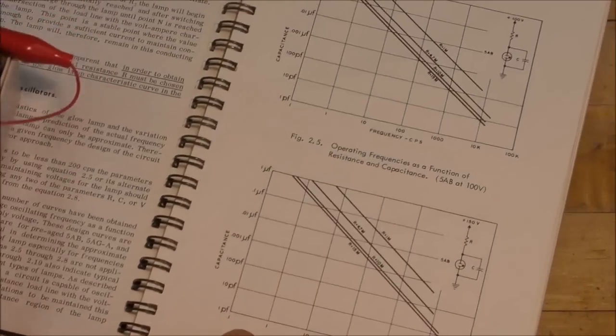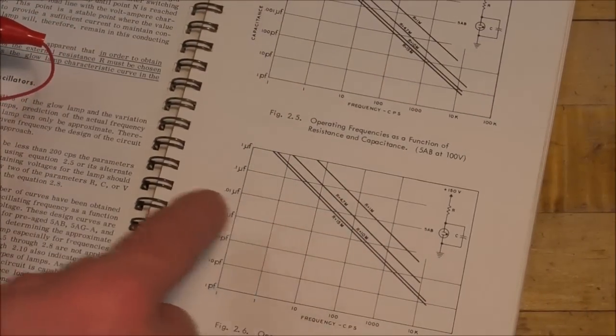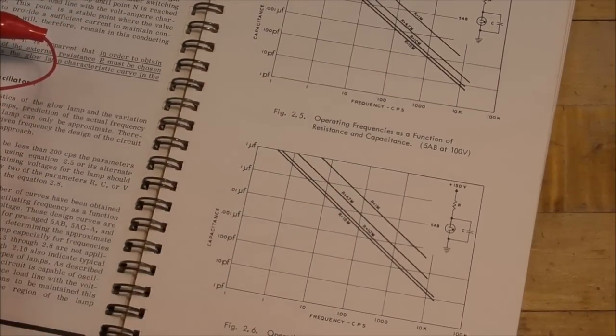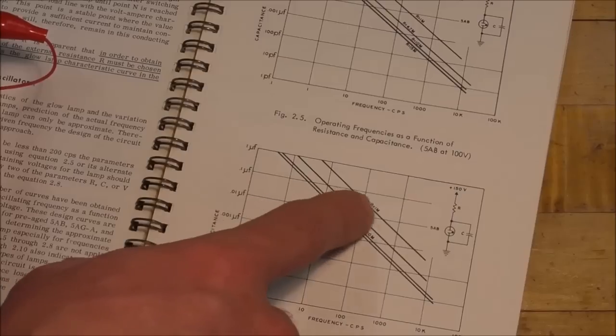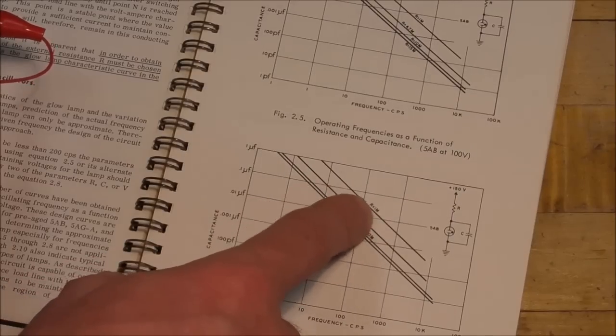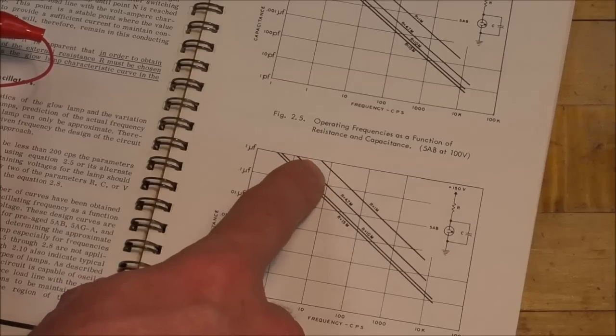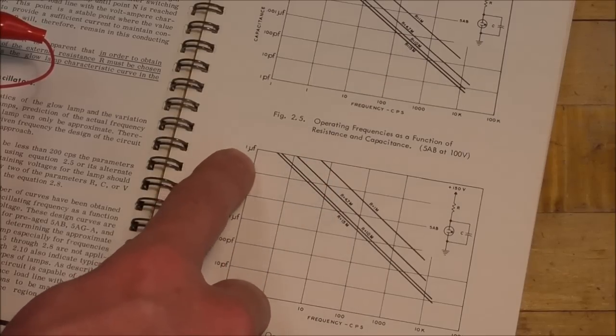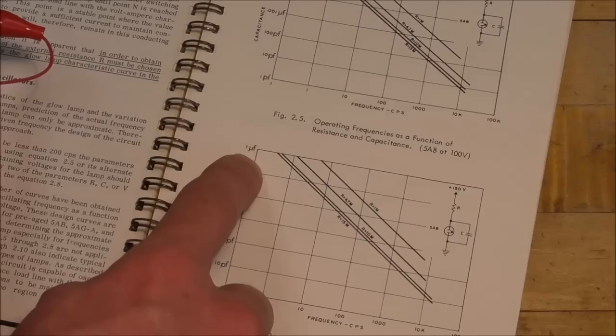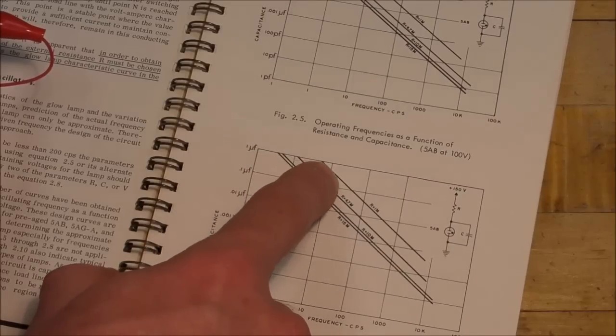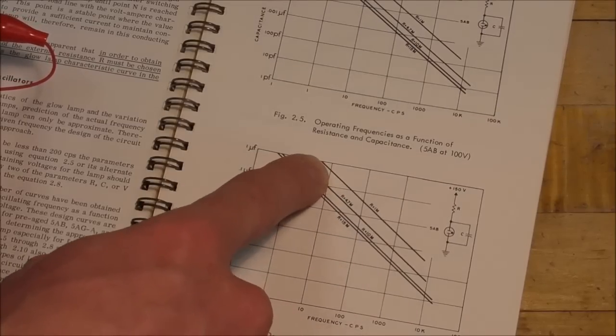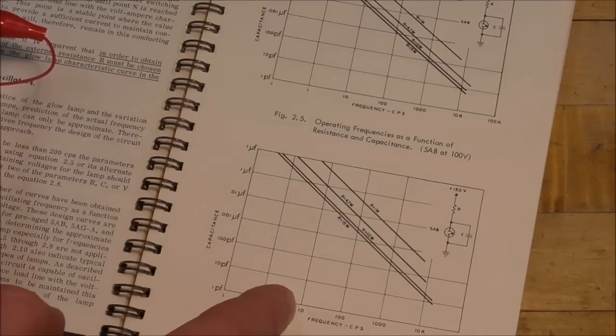But you can see right here on this graph, this is not a 5AB, it's something else. But you can get in the ballpark here. I'm using a 1 megohm resistor and it's half of a microfarad. So right around here is where it should be oscillating at a frequency of 10 Hertz or so.